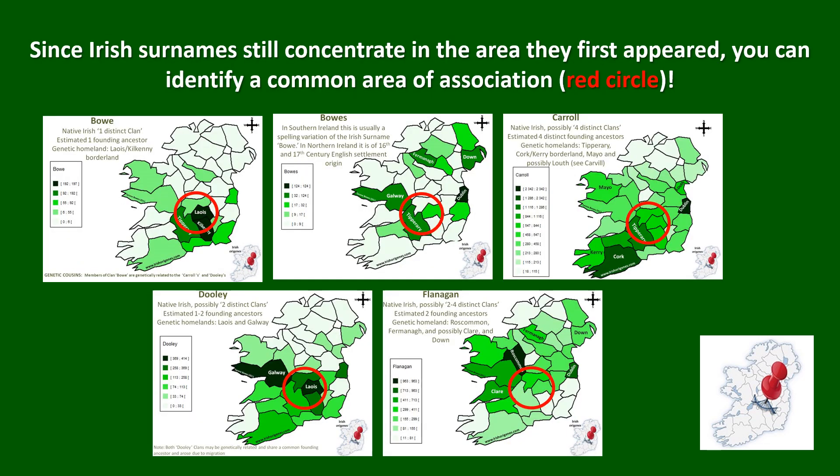You can take a screenshot of each of those maps, put them together, and compare them. In this instance you can see that the Irish Midlands — particularly around County Laois in the red circle — is emerging as a location common to all.